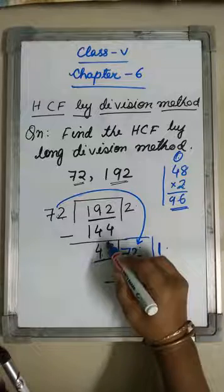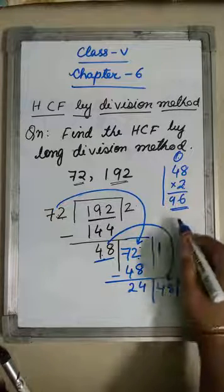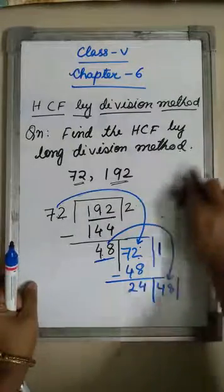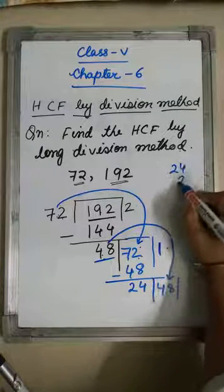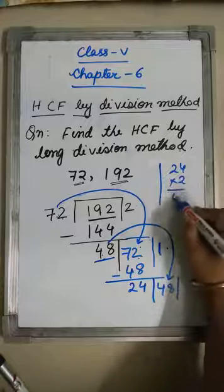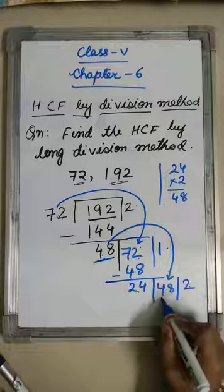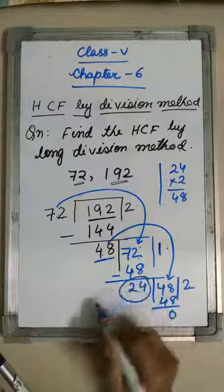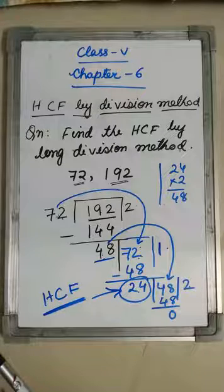Now I bring 48 down here. Again I check how many times I can divide 48 by 24. 24 into 2 is 48, so we can divide 2 times. 24 into 2 is 48, remainder is 0. So the HCF is 24. This is the long division method of finding HCF.